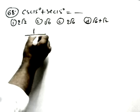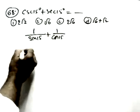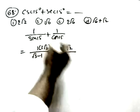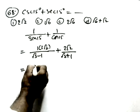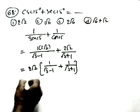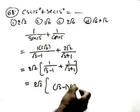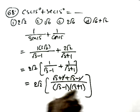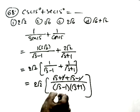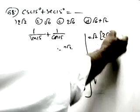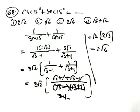What is cosec 15° + sec 15°? This equals 1/sin 15° + 1/cos 15°. Since sin 15° = (√3−1)/(2√2) and cos 15° = (√3+1)/(2√2), we take common factor 2√2 and find LCM (√3−1)(√3+1) = 2. The numerator becomes (√3+1) + (√3−1) = 2√3. So the result is 2√2 · 2√3/2 = 2√6.